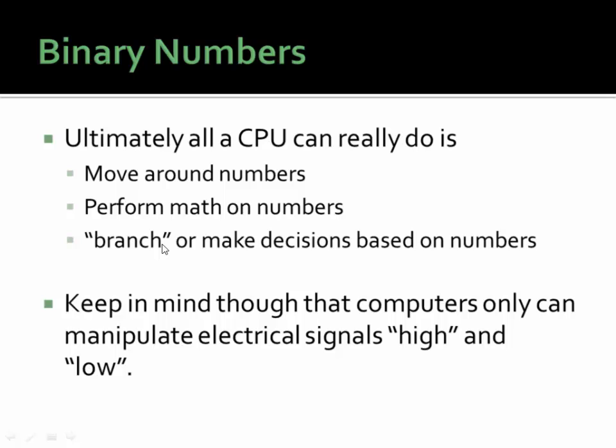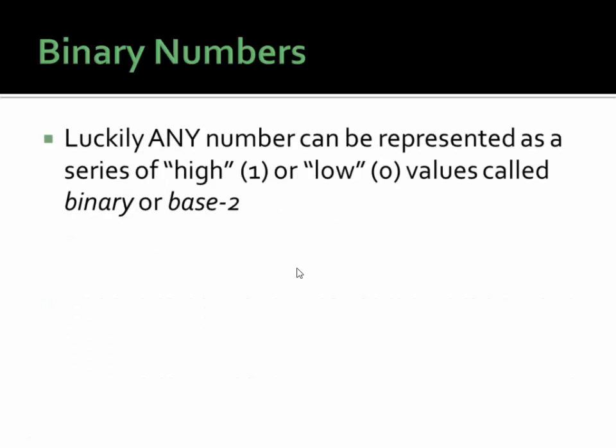Keep in mind, computers can only manipulate electrical signals in two states: high or low. At least, digital computers — other kinds of computers like quantum computers are well beyond the scope of this discussion. Luckily, any number can be represented as a series of high (one) or low (zero) values, called binary or base two.